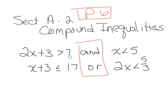For example: 2x plus 3 is greater than 7 AND x is less than 5 — meaning only numbers that satisfy both statements. Or: x plus 3 is less than or equal to 17 OR 2x is less than 5 thirds — meaning x can meet one or the other statement. So AND and OR are not the same thing; they are two different kinds of compound inequalities.